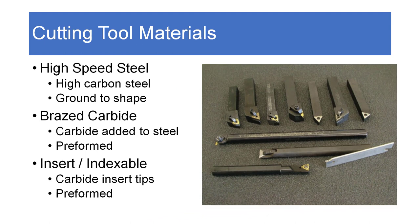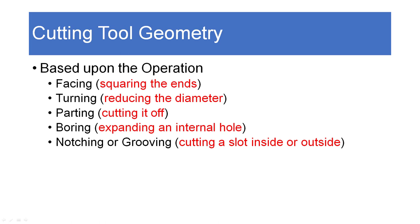When we talk about the geometry of a cutting tool, we're really talking about what operation we're going to do. We break our projects down into basically five different operations. We're either facing off the end, which means we're squaring it, or we're turning down the diameter along lengthwise, or perhaps we're parting and cutting the part off using a parting tool. We can also do boring, which means that we're making an existing internal hole larger, or we're drilling a hole to start, or notching and grooving, which is cutting a slot. It can be on the inside or the outside of the part. We'll take a look at a short video of some of those operations here towards the end of this presentation.